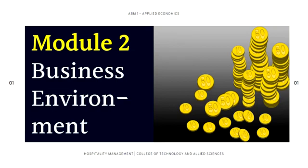Hello class, we are now in Module 2 in the subject Applied Economics. In this module we will discuss about the business environment. The business environment includes all internal and external factors that can affect the business performance and functions — it includes employees, customers, management, supply and demand, business regulations, and competition.